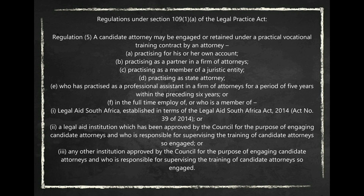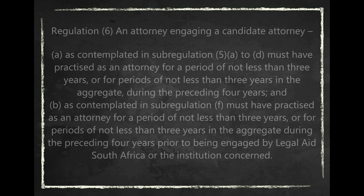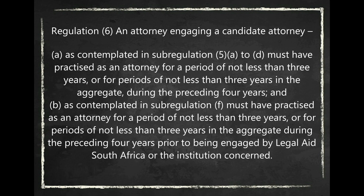Continuing Sub-Regulation 5: practicing as a state's attorney who has practiced as a professional assistant in a firm of attorneys for a period of five years within the preceding six years, or in the full-time employ of, or who is a member of Legal Aid South Africa, a legal aid institution approved by the Council for the purpose of engaging candidate attorneys, or any other institution approved by the Council. Under Sub-Regulation 6, an attorney engaging a candidate attorney as contemplated in Sub-Regulation 5(a) to (d) must have practiced as an attorney for a period of not less than three years, or for periods of not less than three years in aggregate during the preceding four years. As contemplated in Sub-Regulation (f), must have practiced as an attorney for not less than three years in aggregate during the preceding four years prior to being engaged by Legal Aid South Africa or the institution concerned.